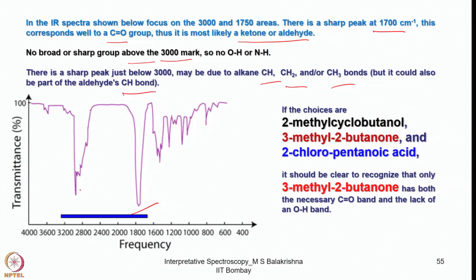This gives some idea about what type of molecule the IR represents. If the choices are between 2-methylcyclobutanol, 3-methylbutanol, and 2-chloropentanoic acid, it should be clear to recognize that 3-methyl-2-butanone has the necessary C=O bond with no O–H present. By simply analyzing the spectrum, we should be able to arrive at the right molecule this IR spectrum is representing.